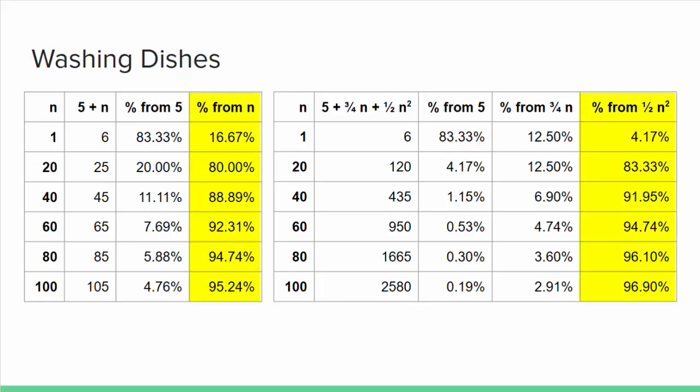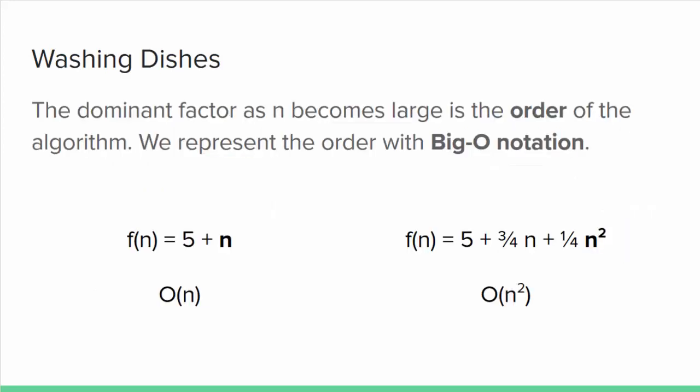We call this the algorithm's order, and we represent it with Big-O notation. For f(n) = 5 + n, then, we say the algorithm is order n, or has a Big-O of n. For f(n) = 5 + 3/4 n + 1/4 n², we say the algorithm is order n squared, or Big-O of n².